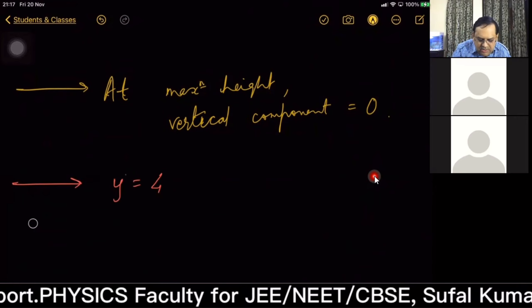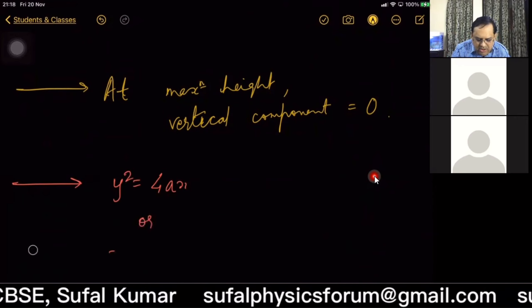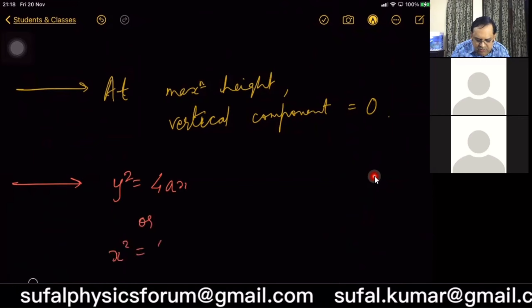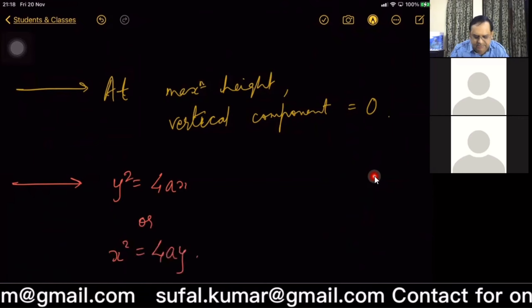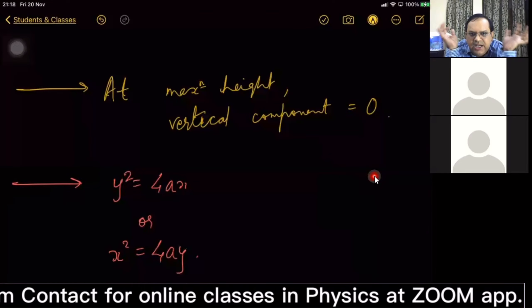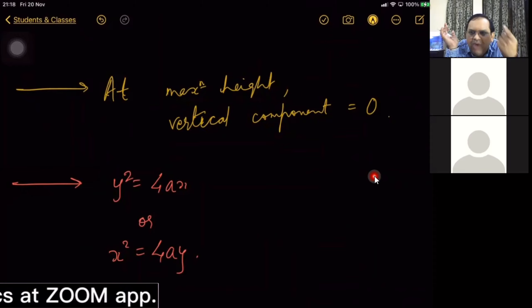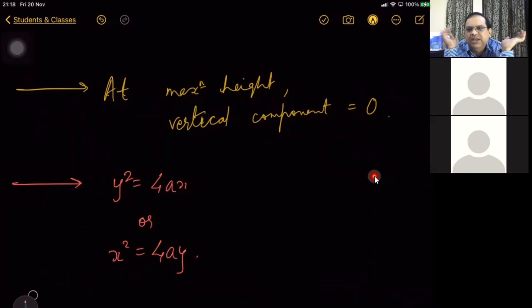From maths knowledge, y² = 4ax or x² = 4ky. Have you heard this? This is not studied in physics, it's maths language, and you're going to study in 11th only. In 11th maths syllabus, conic section. In a nutshell, quadratic equation ka graph parabola.